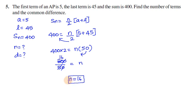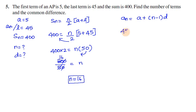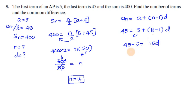If you want to find the common difference, we will use the formula l equals a plus n minus 1 into d. So, an equal to 45. Substituting: 45 equals 5 plus 16 minus 1 into d, so 45 equals 5 plus 15d.